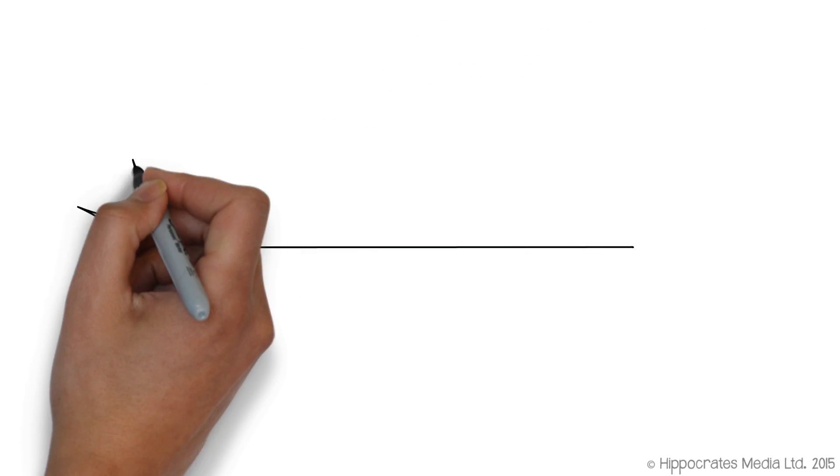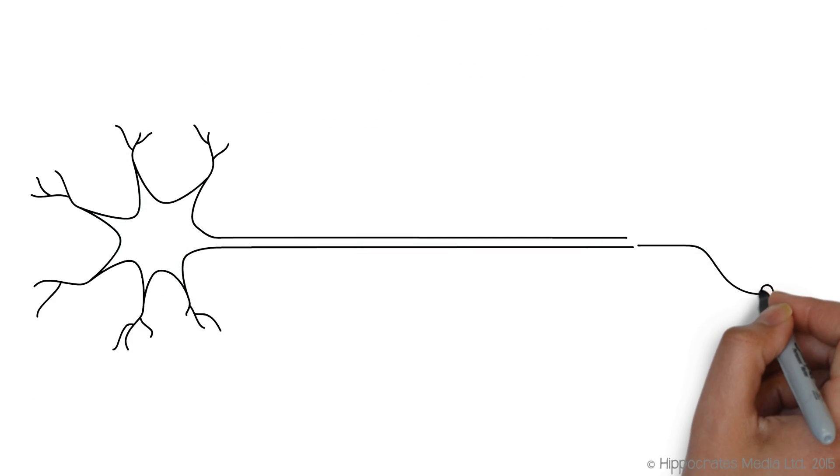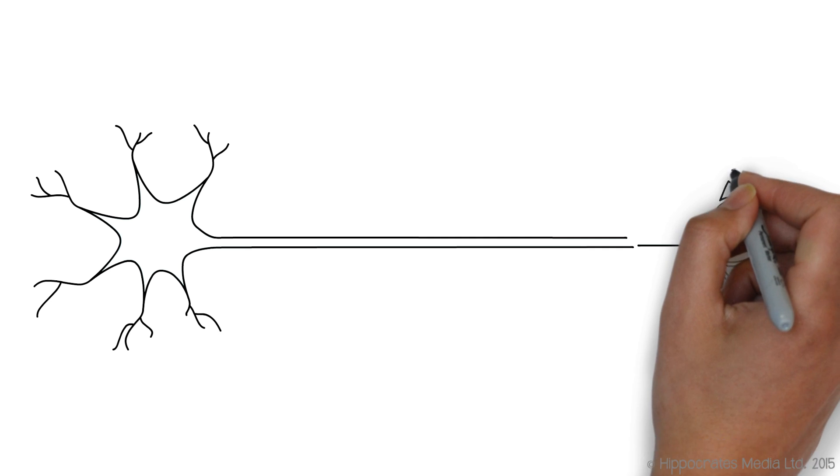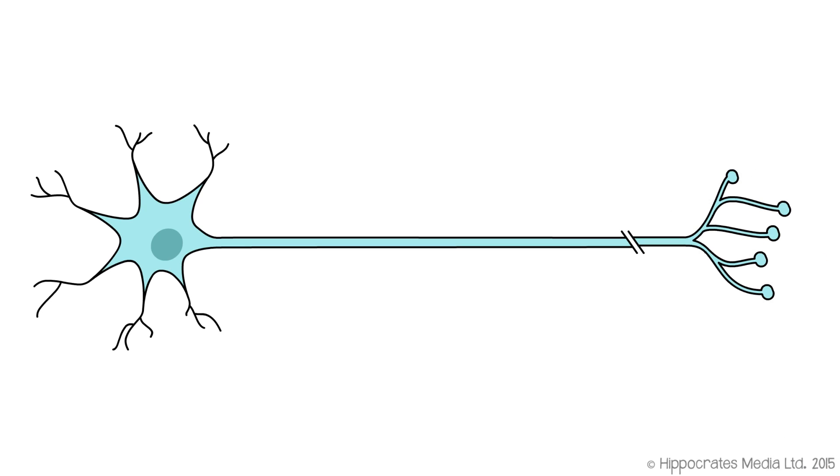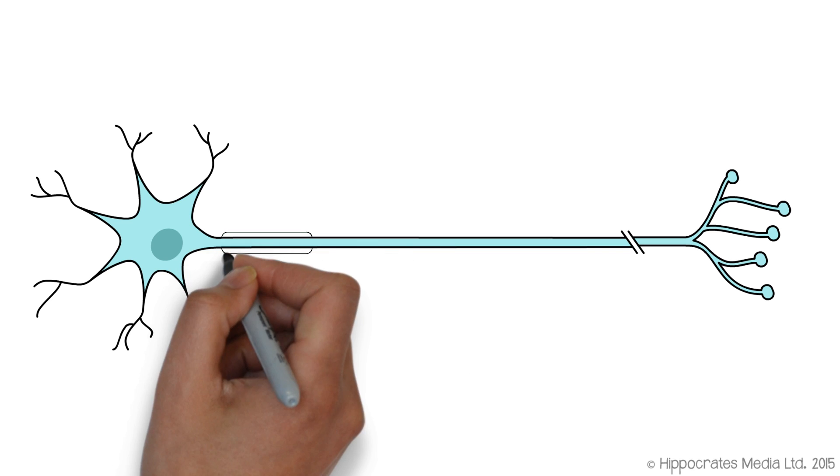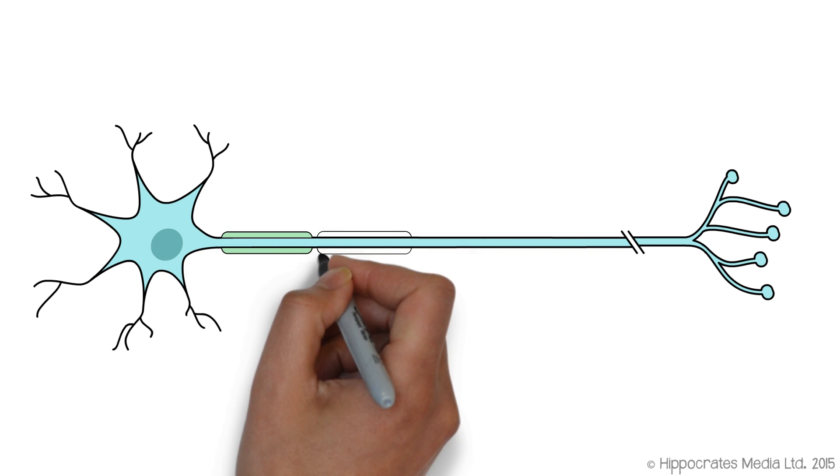What I've described so far is appropriate for an unmyelinated axon. I haven't talked about myelin yet. Of course, in many axons, especially the fast-conducting ones in vertebrates, in us, we have myelin, which forms a sheath around those axons.